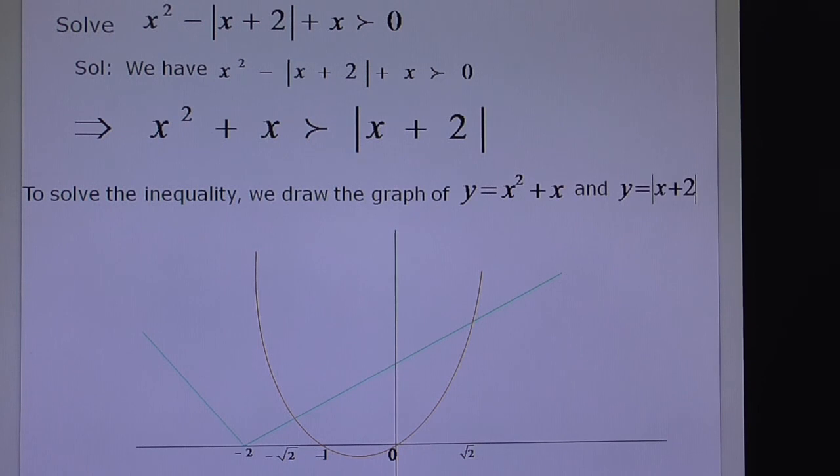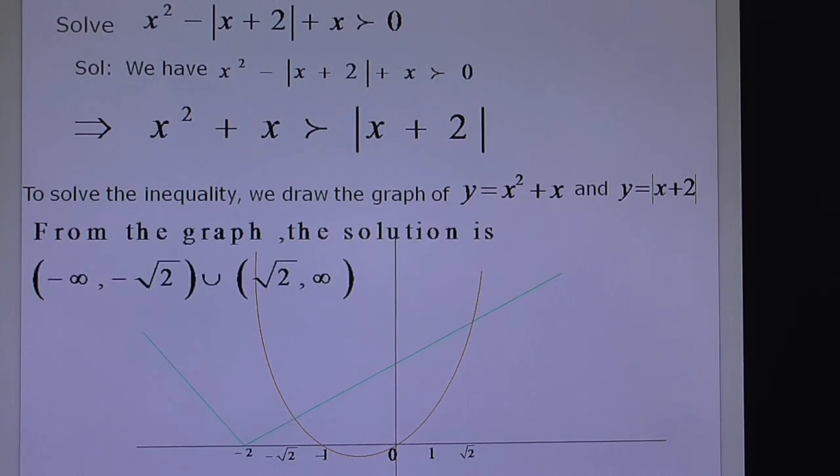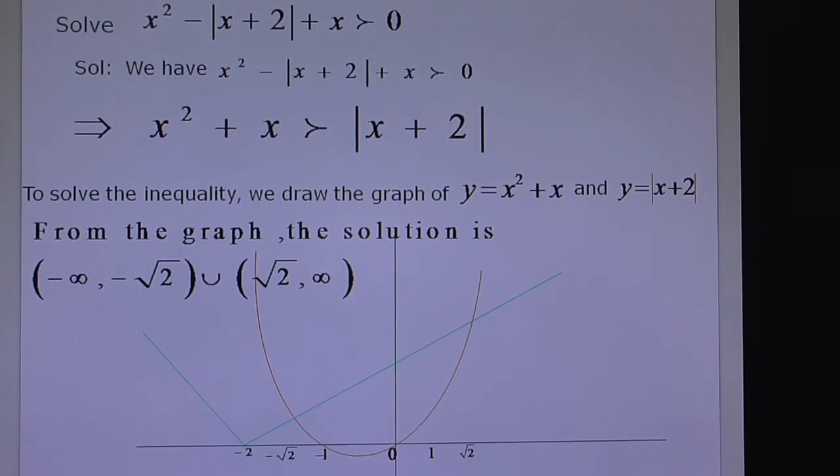By observing this graph, you can tell the solution of the inequality is (-∞, -√2) ∪ (√2, ∞). Just observe from the graph where the x² + x curve is greater than |x + 2|. This gives the solution.